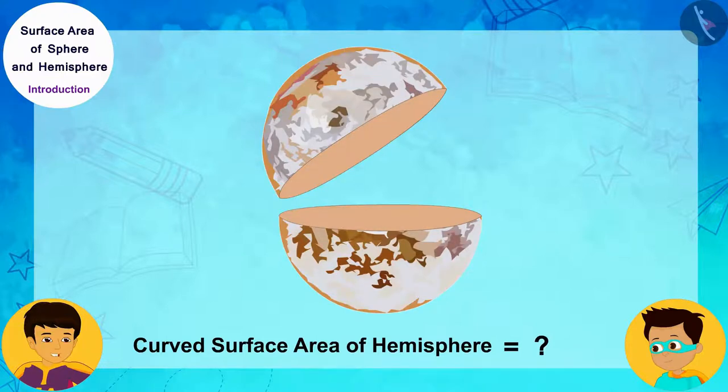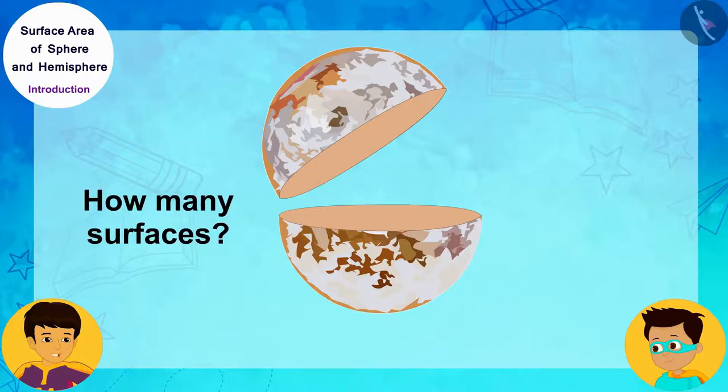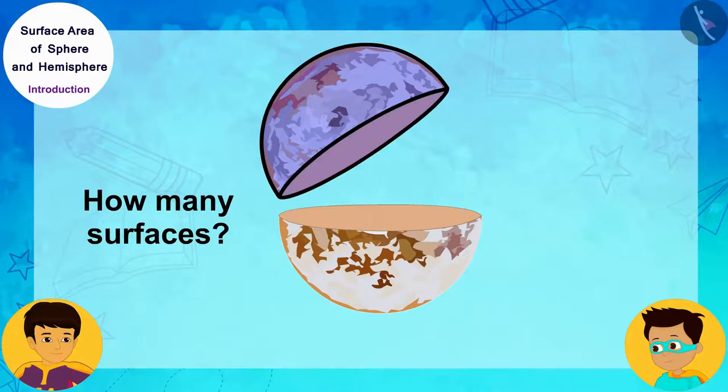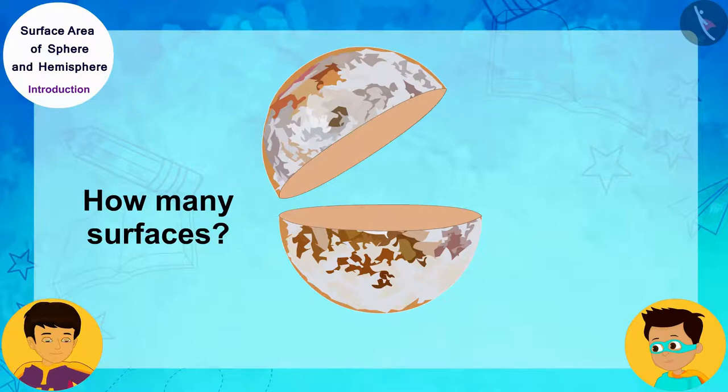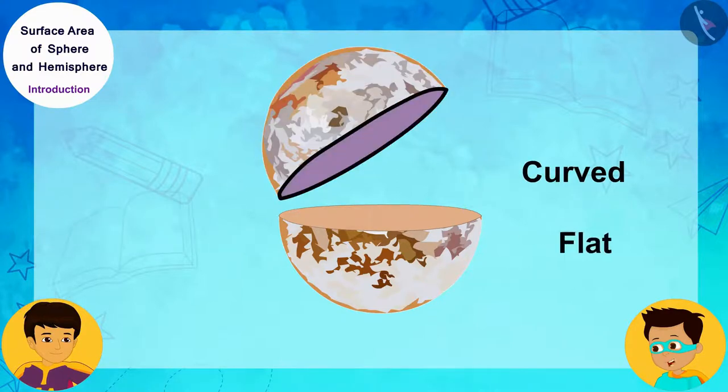First, you tell me how many surfaces are there in this hemisphere? Two. One is curved and the other is flat.